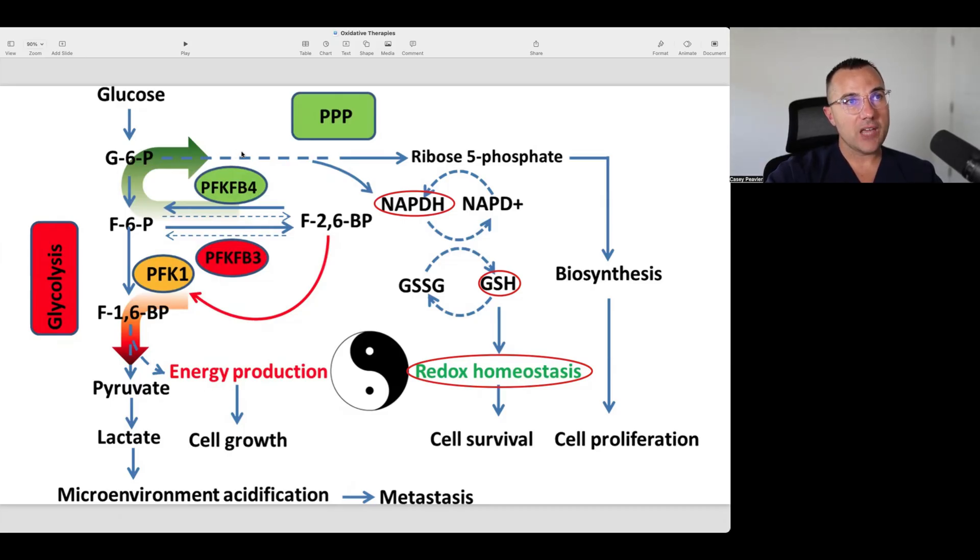Cancer cells can take glucose and it can go down towards lactate, creating the external shield system or the tumor microenvironment acidification and leads to cell growth through energy production. Or glucose can be siphoned off towards the PPP to make NADPH, which then helps recycle glutathione and helps maintain redox homeostasis. When we put folks on a ketogenic diet or block glucose utilization, we are also effectively blocking glucose from being utilized in the PPP and being utilized to recycle NADPH and glutathione subsequently and to maintain redox homeostasis.